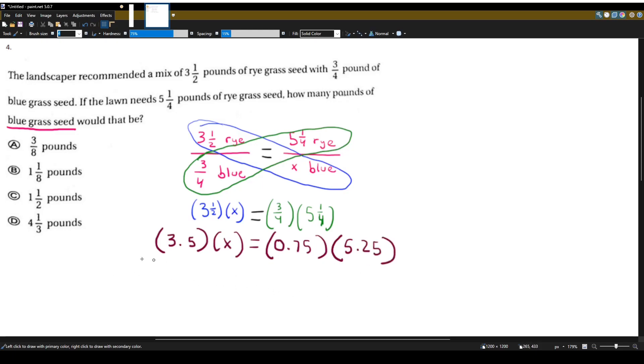Now we have some nice decimals to work with, so we can go ahead and just multiply with our calculator. 3.5 times x is going to be just 3.5x. And 0.75 times 5.25 using the calculator will get me 3.9375.